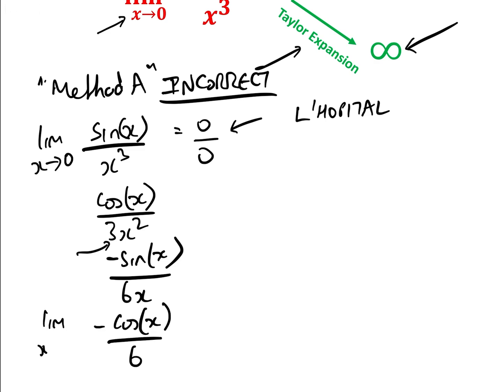And we think, finally, okay, the limit as x approaches 0. Cos of 0 is 1 and over 6 minus. So therefore, our limit is minus 1 sixth. That's incorrect.